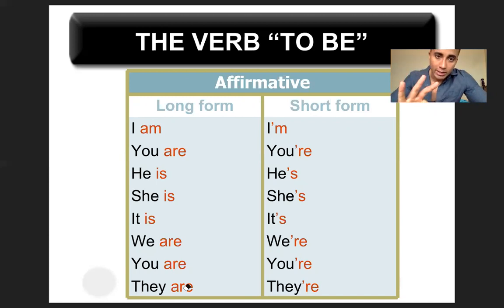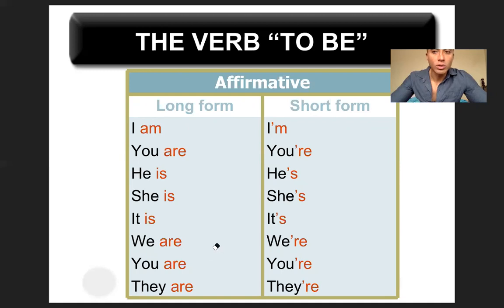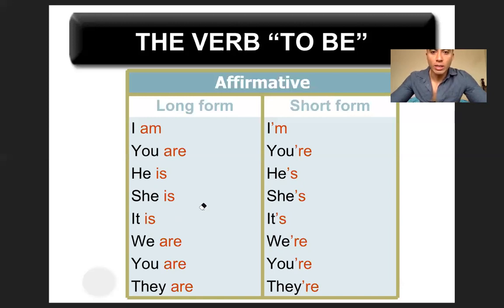Recuerden, el verbo to be son tres formas: am, is, are, y significa ser o estar. Aquí tienen los personal pronouns: yo, tú, él, ella, esto, nosotros, ustedes y ellos. Am siempre va con I. Are siempre va con you, we, you, they. Y is solo va con he, she, it. Aquí tienen las formas cortas y las formas largas.